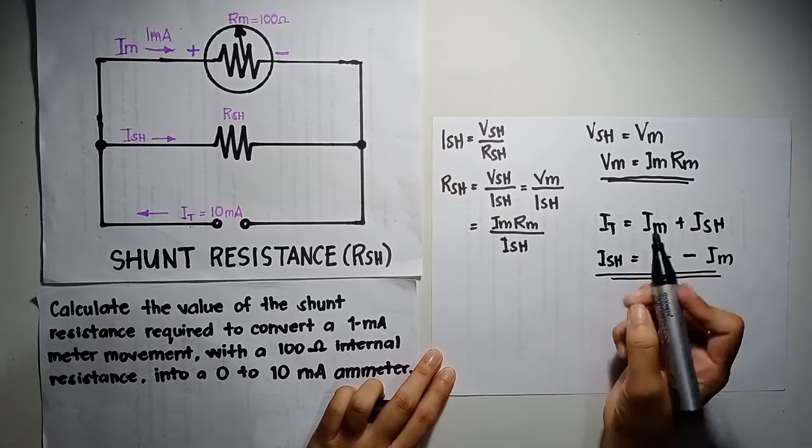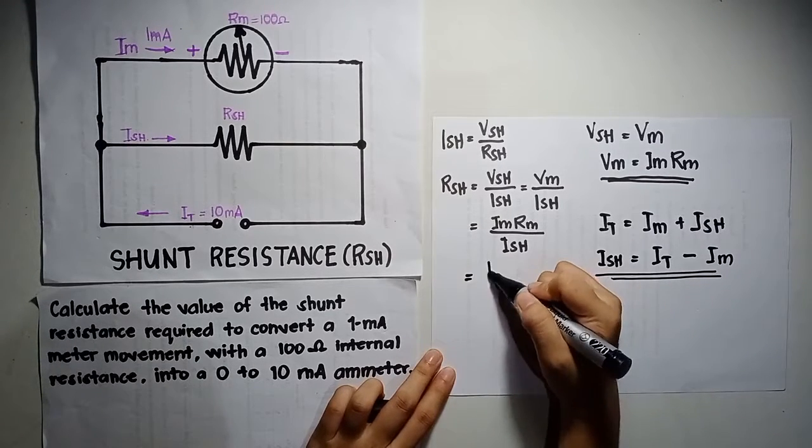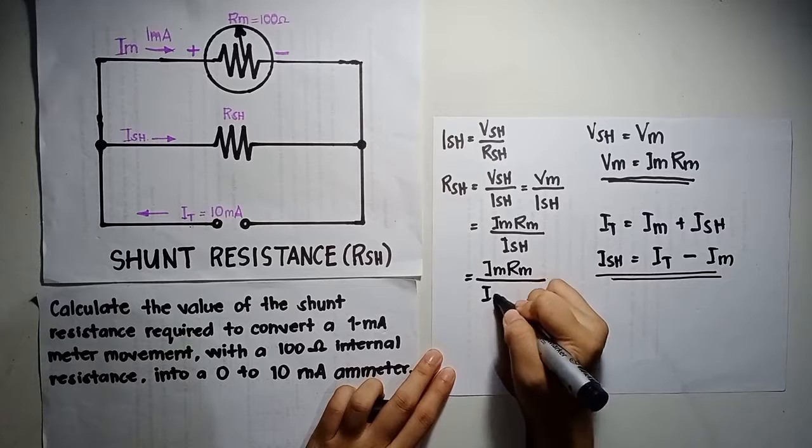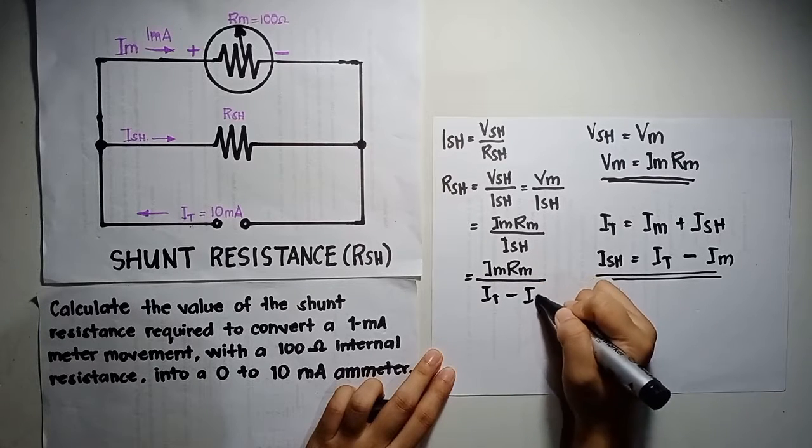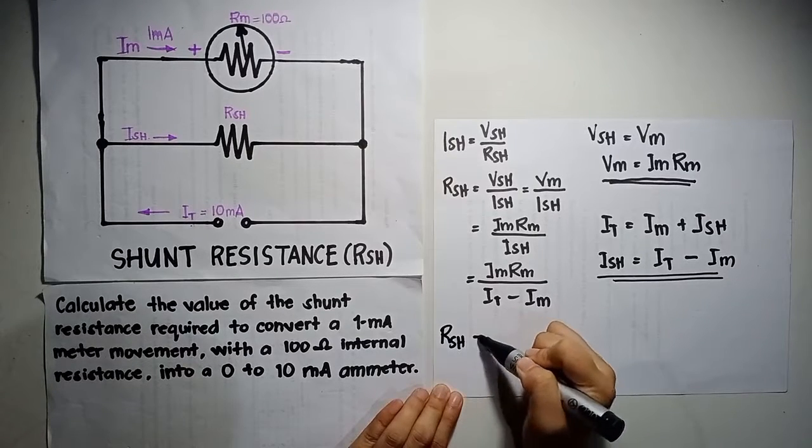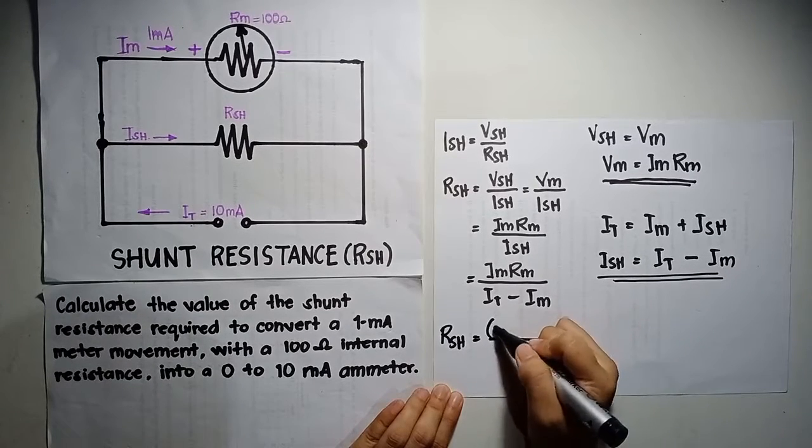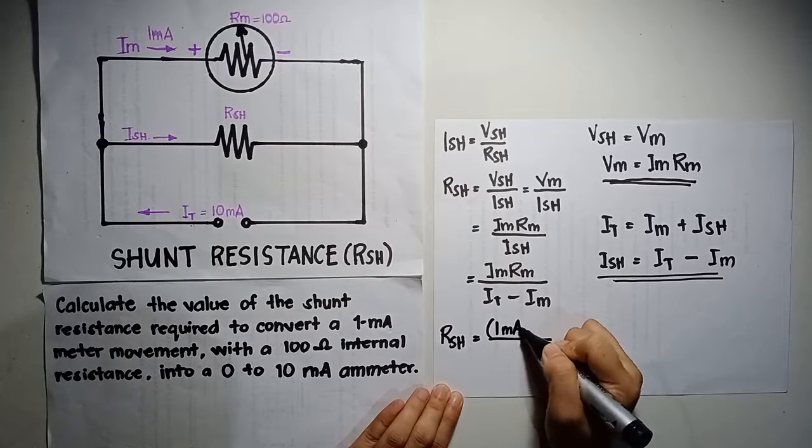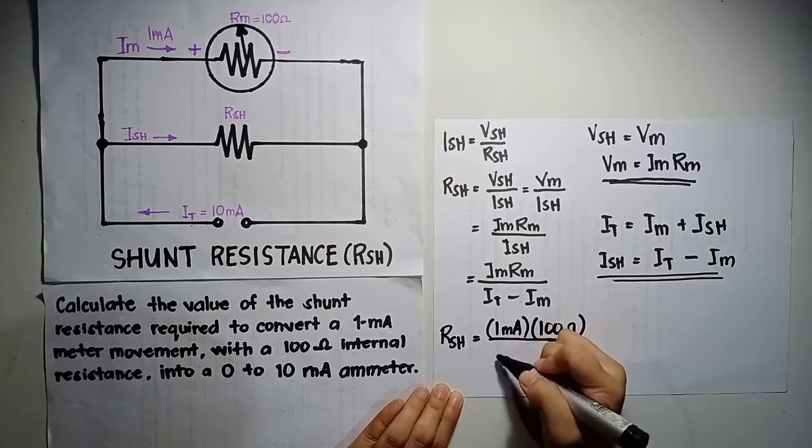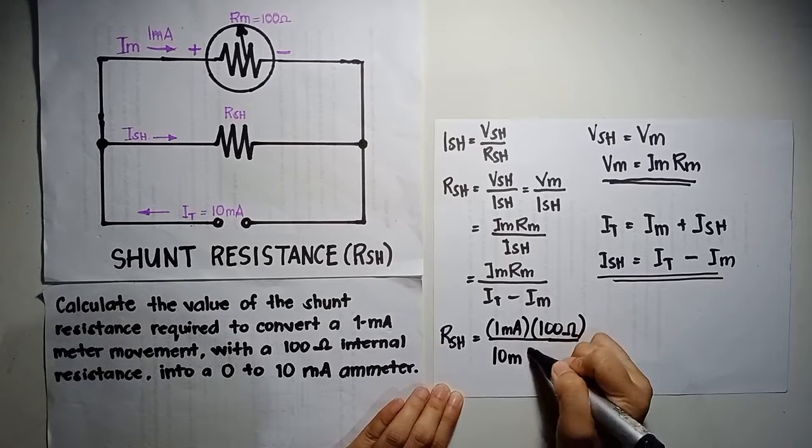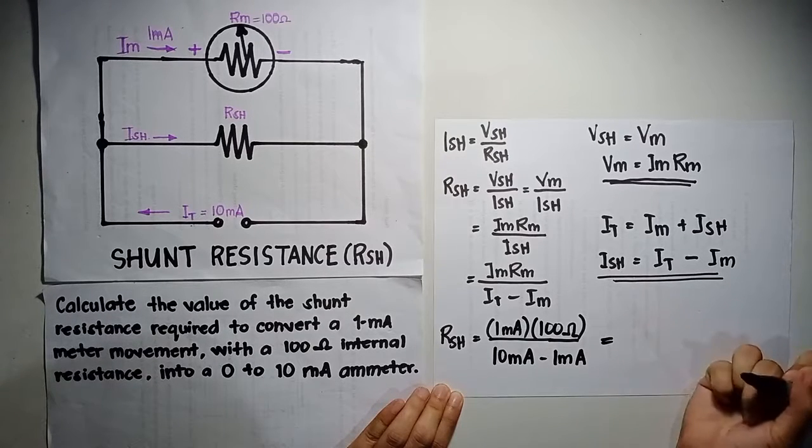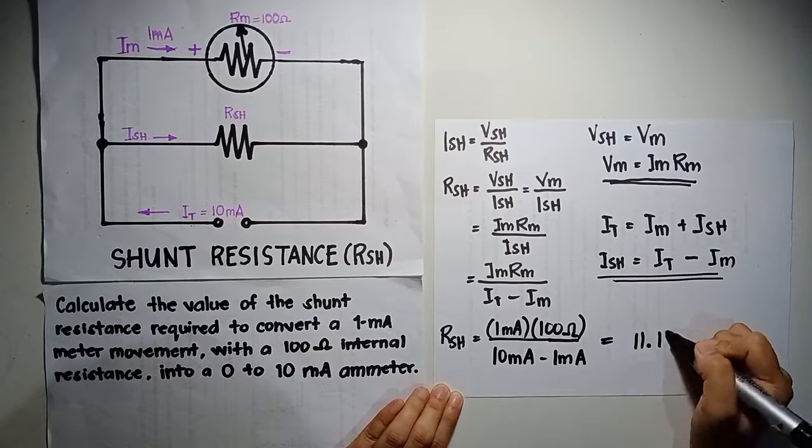Substitute Ish. Substitute the given values. So, Rsh is equal to 11.11 ohms.